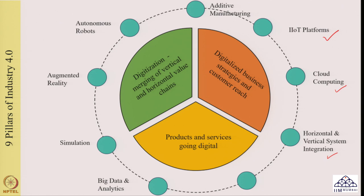We are going to extend our discussions to the remaining pillars of Industry 4.0. The next and very important pillar we are going to start is cyber security. IoT helped us in capturing the data, cloud computing helped us in sharing and analyzing the data, and horizontal and vertical system integration helped in deciding the right way of integrating the overall processes. Cyber security is responsible for taking care of the security of data shared between different partners in a given supply chain.